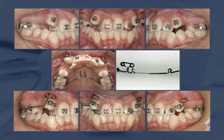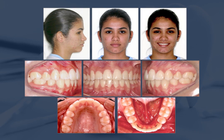The lower teeth were aligned and leveled, and canine retraction and space closure were performed. Outstanding results were achieved at the end of treatment with the molar relationship preserved in class 1, and ideal occlusal contacts obtained among all teeth, especially the canines. A mutually protected occlusion was obtained with stable contacts.